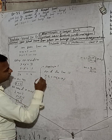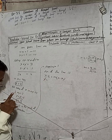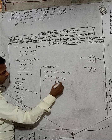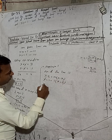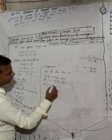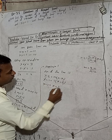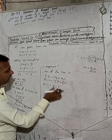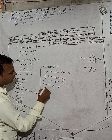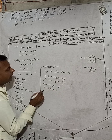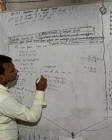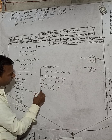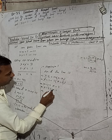Substituting: x1 equals 2 and y1 equals 1. So y minus 1 equals 1 times x minus 2. Rearranging, x minus 2 equals y minus 1, which gives x minus y equals 1.